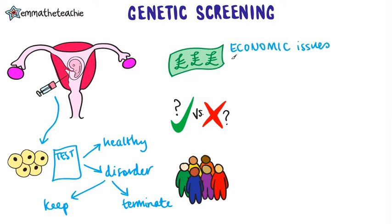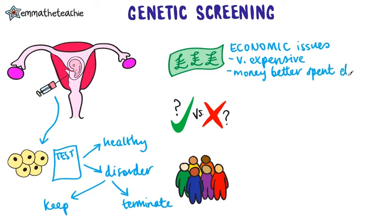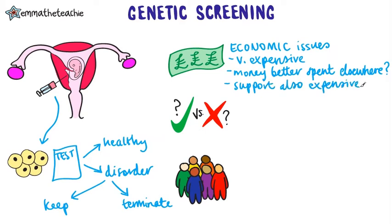With economic issues, screening is very expensive and currently only offered to those with a family history of disorders. Some people think every couple should be offered it, while others think the money could be better spent somewhere else. However, supporting a family with a child affected by a genetic disorder is also very expensive.